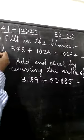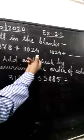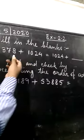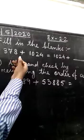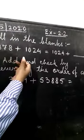Number 1, first one, 378 plus 1024. As we have discussed in our last class, that by property of commutative, property of addition, we can change the order of addends in any order for addition.